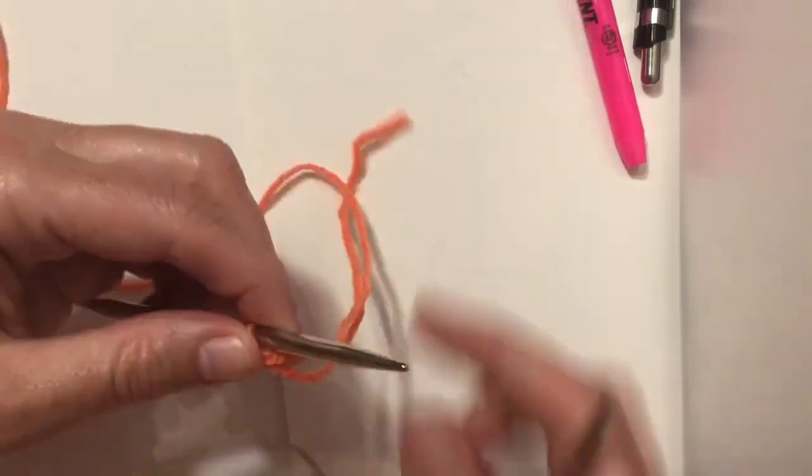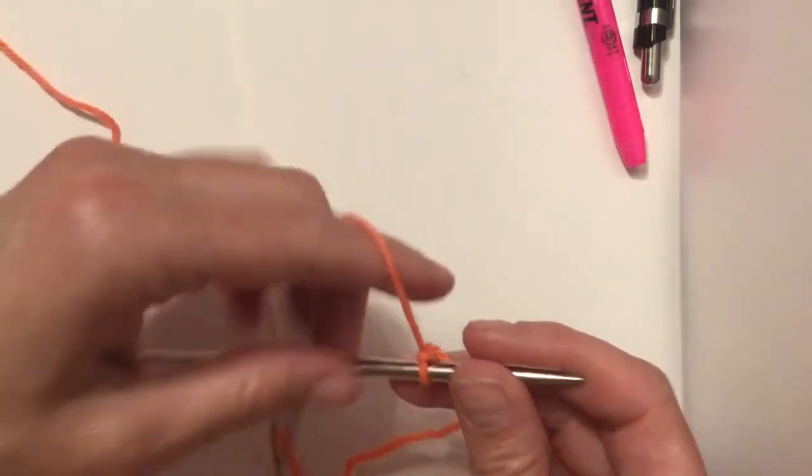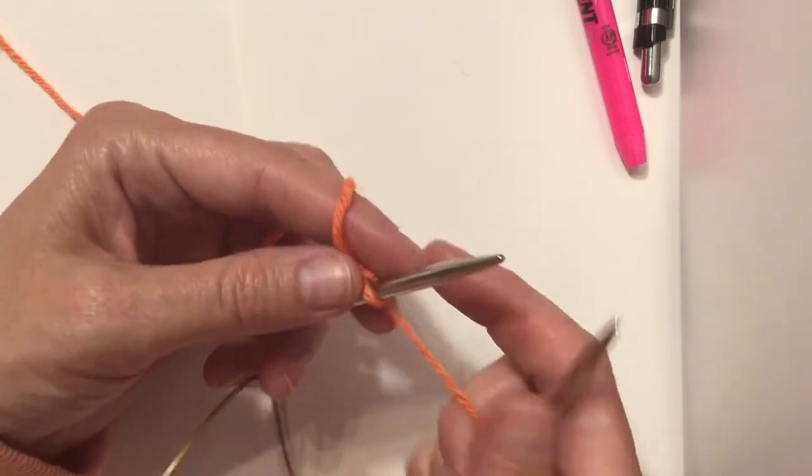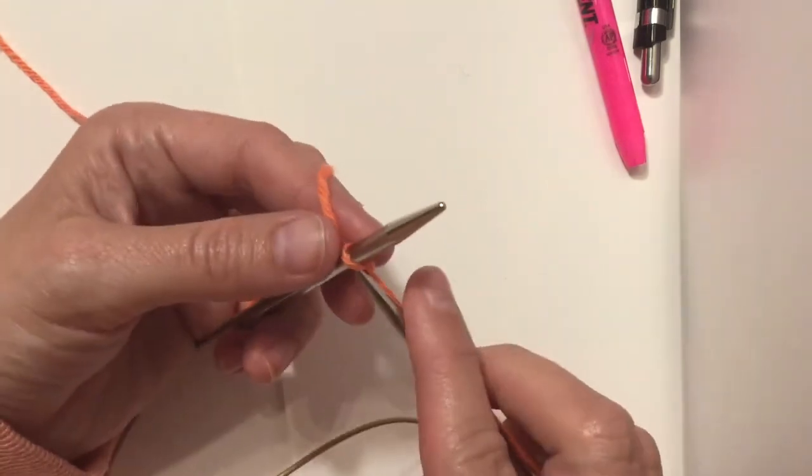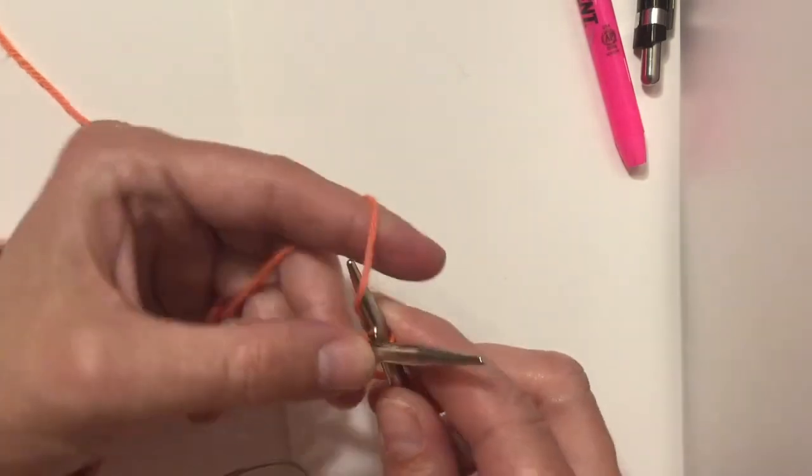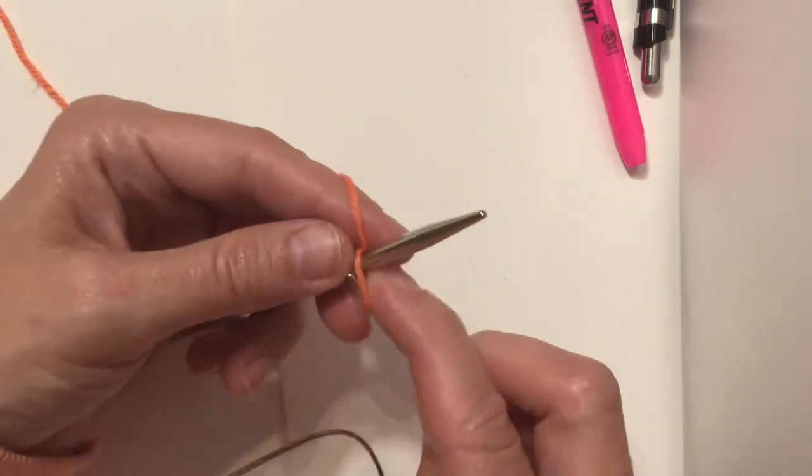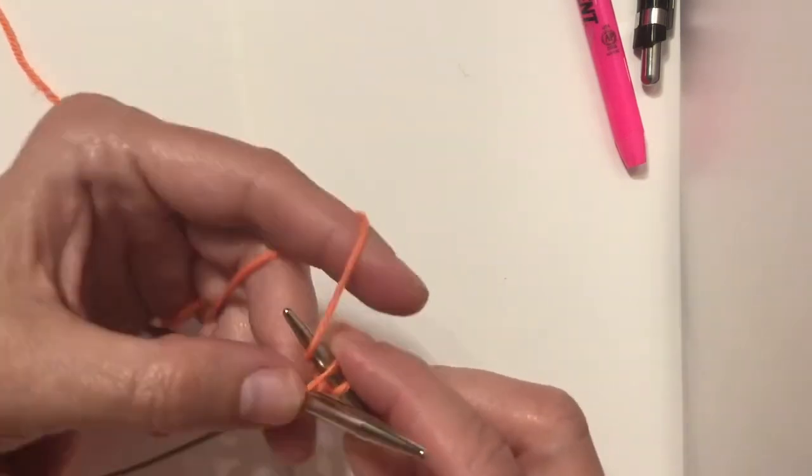So then what you do is the instructions say on your right side KFB, so knit front and back. I'm going to do this continental, and then I'll do another one throwing. So this is knit front and this is knit back.